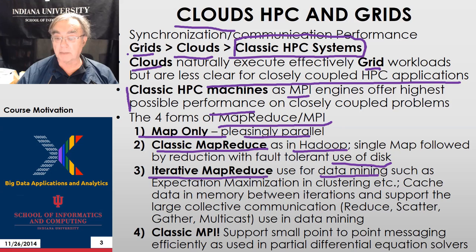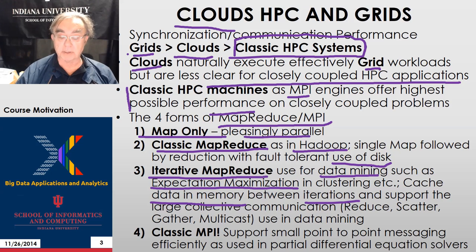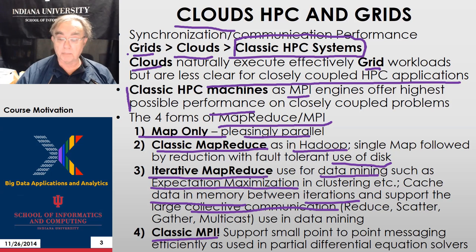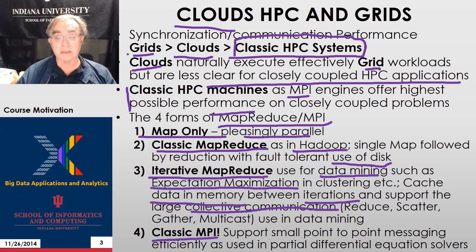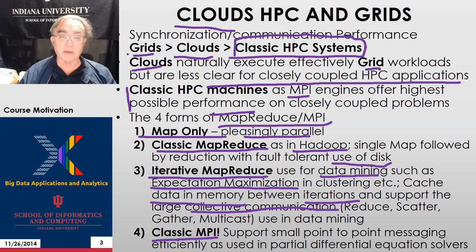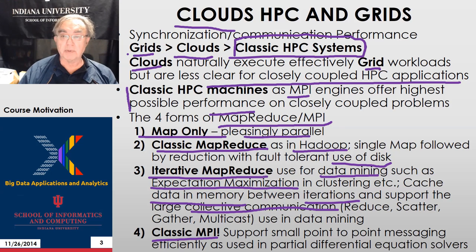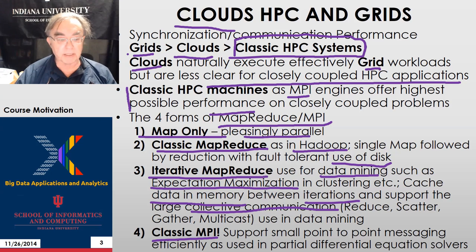Iterated MapReduce is used for data mining, such as expectation-maximization methods and clustering. It caches data in memory between iterations and does not write to disk. It also supports high-performance collective communication such as reduction, scatter, gather, broadcast, and multicast. Classic MPI supports small point-to-point messages typical in simulations. Simulations tend to have lots of small messages because particles spread around nodes only interact with a few nearby particles, leading to very many small messages.